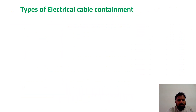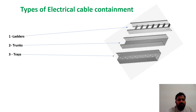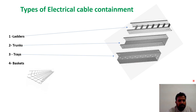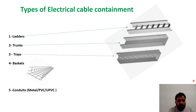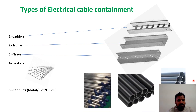Now we will see the types of electrical cable containment system. Cable containment systems include ladders, trunks, and trays — as you can see here, ladders, trunks, and trays. We also have baskets, and conduits, either metal, PVC, or UPVC. This is the GI conduits, PVC conduits, and UPVC conduits. These are the main electrical cable containment systems.